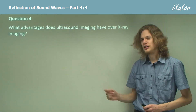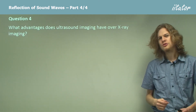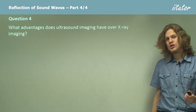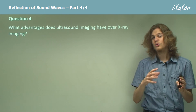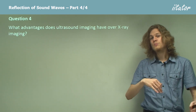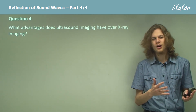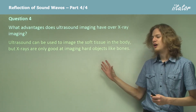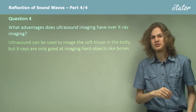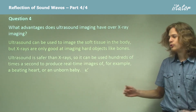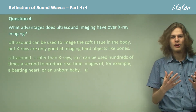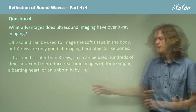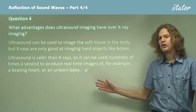What advantages does ultrasound imaging have over x-ray imaging? Although x-rays produce lovely high-resolution pictures of things like broken bones, they're not very good at imaging moving parts or soft parts of the body. Ultrasound can image soft tissue whereas x-rays are only good at imaging hard objects. As well as this, ultrasound is safer — a pulse of ultrasound has much lower energy than a pulse of x-rays — so we can use it hundreds of times a second to produce a real-time image of objects inside the body.